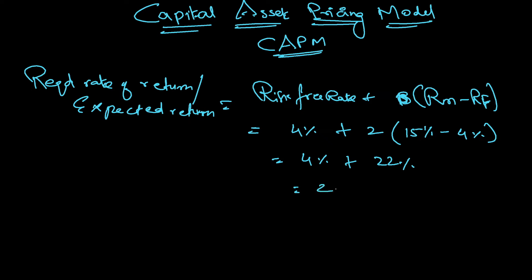So if the company, so here it is coming as 26 percentage because it's a high beta stock. Because the beta is very high, the required rate of return is also quite high here.